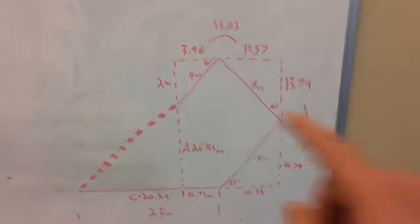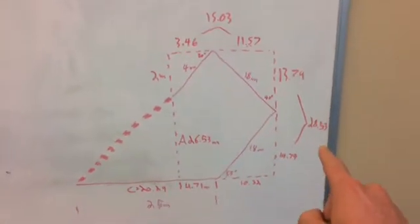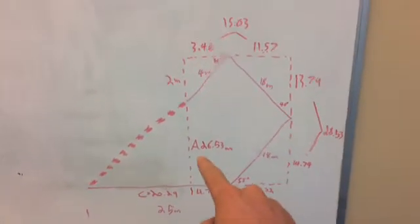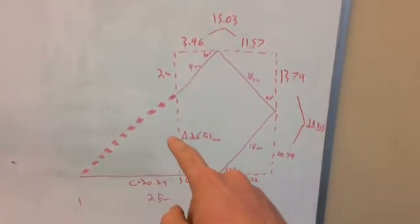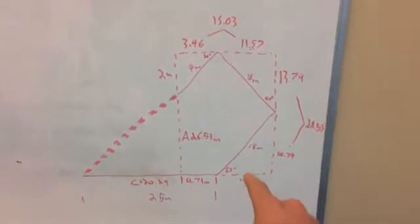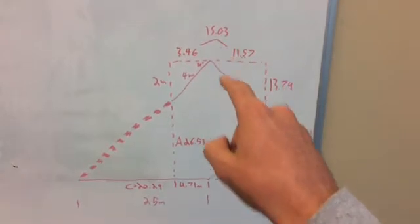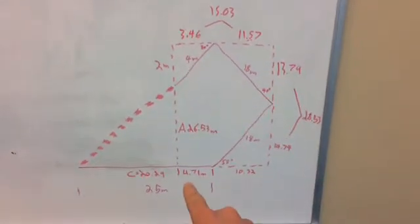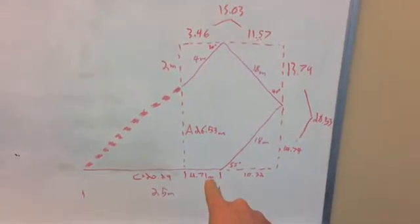After you've subtracted 2 from 28.53, you would arrive at 26.53 for length A. And after you subtract 10.32 from 15.03, you'll arrive at 4.71 for this point.